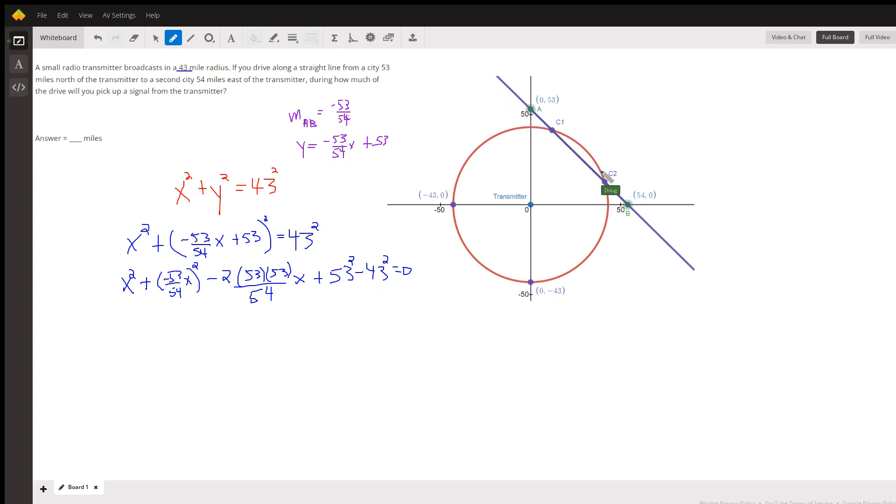So if we could find the equation of this line and then find the points of intersection where the line meets the circle, then the distance from C1 to C2 would be the number of miles that the driver of the car was in range.